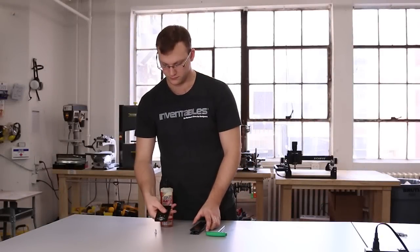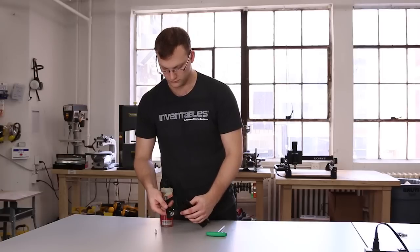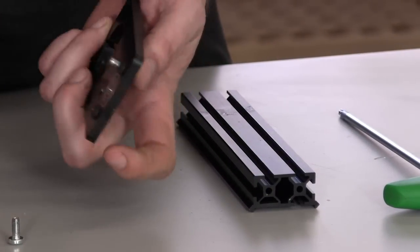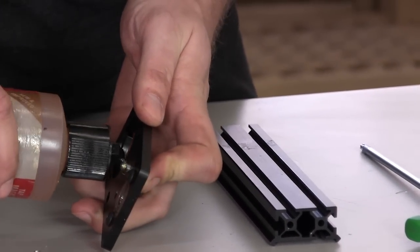We'll use self-tapping screws again to attach the Z-plate with the Z-axis maker slide. Again, use cutting fluid if you have it. It makes this step a lot easier.